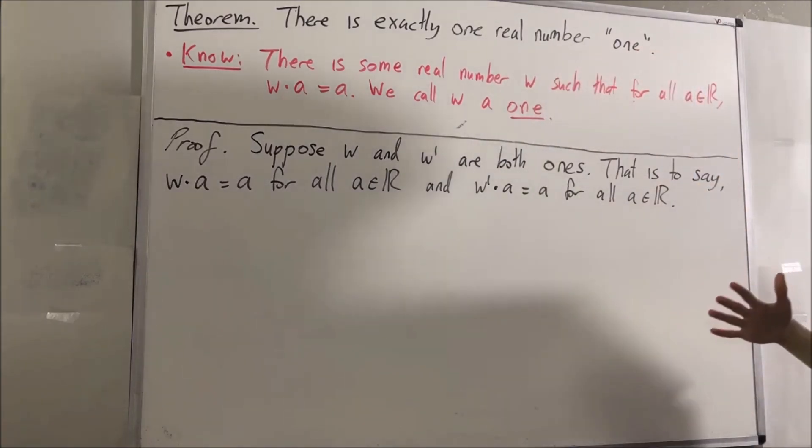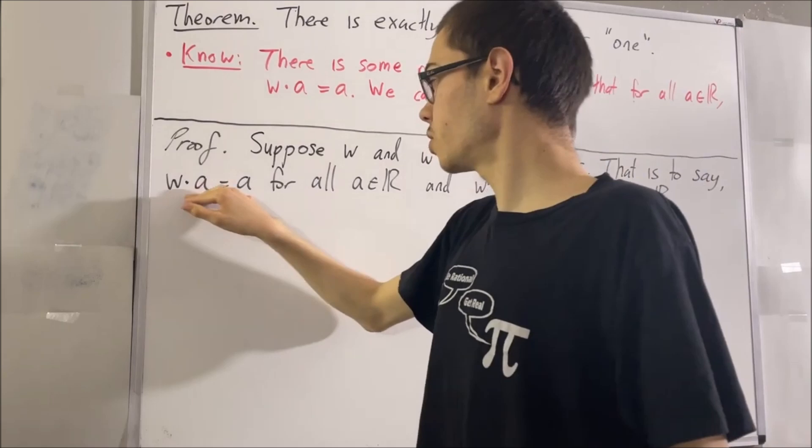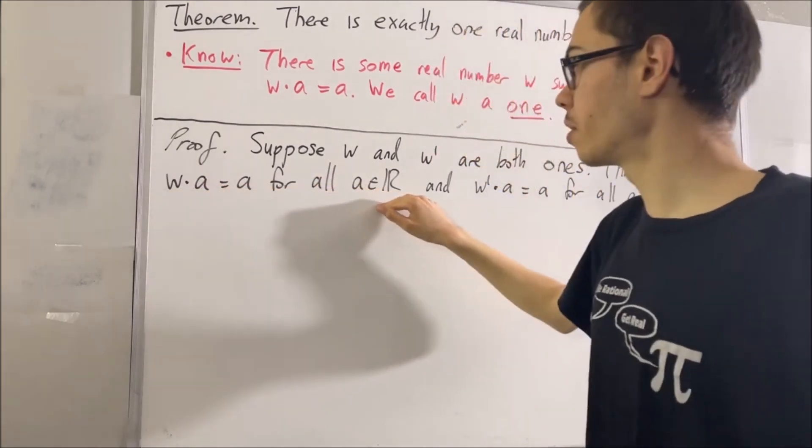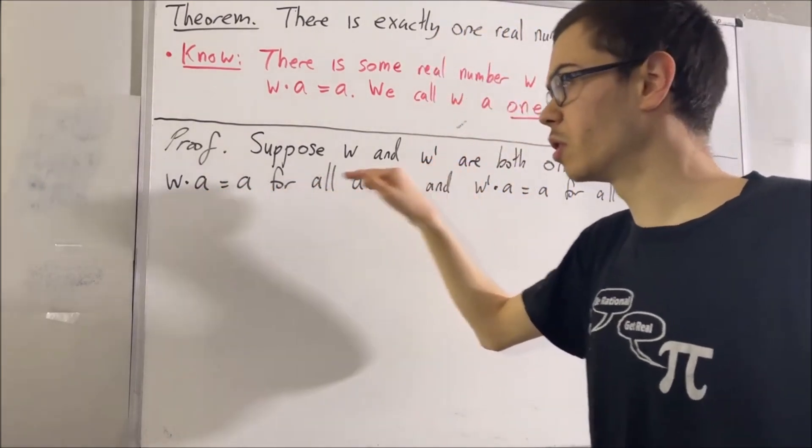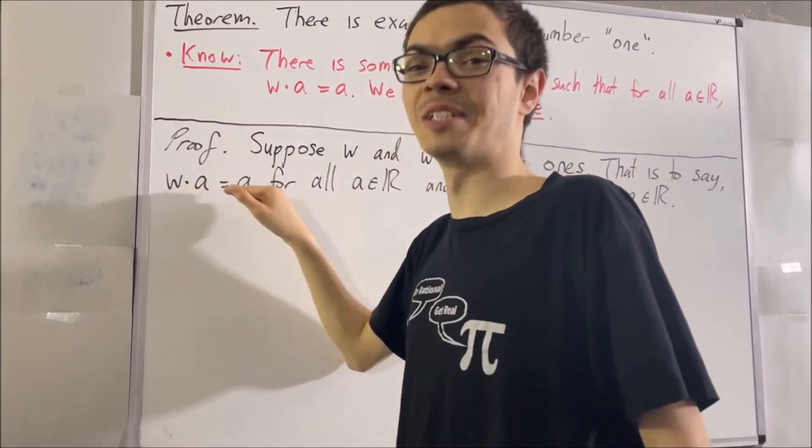Okay, now to do that: since this equation works for every real number, it must work for w prime. So w times w prime is equal to w prime.